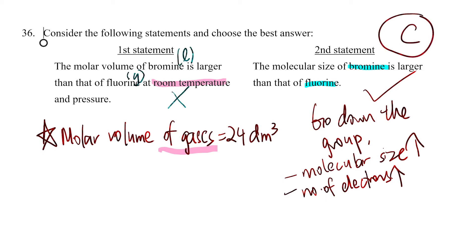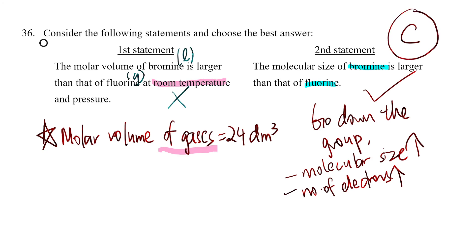Since the first statement is wrong and the second statement is correct, the answer is C. In the public exam you will be given what A, B, C, and D mean, but it's better to be familiar with what each option represents so you don't spend time reading it. The answer for this question is C.